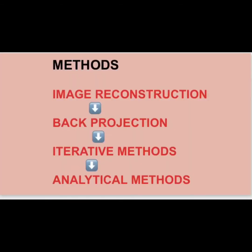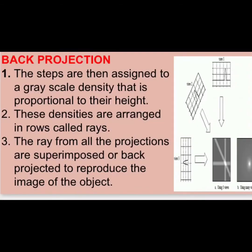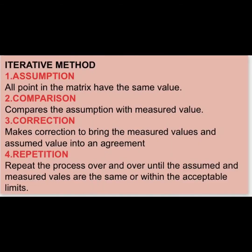Methods of image reconstruction include back projection, iterative methods, and analytical methods. In back projection, the steps are assigned to a grayscale density proportional to their height. These densities are arranged in rows called rays. The rays from all projections are then superimposed — or back projected — to reproduce the image of the object.